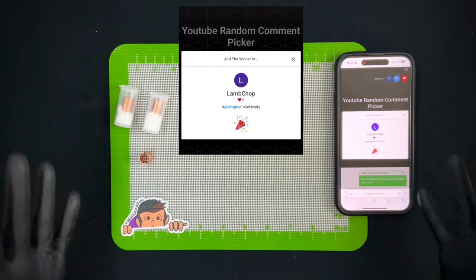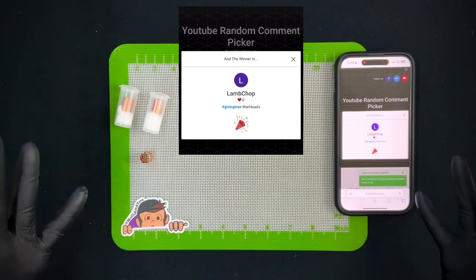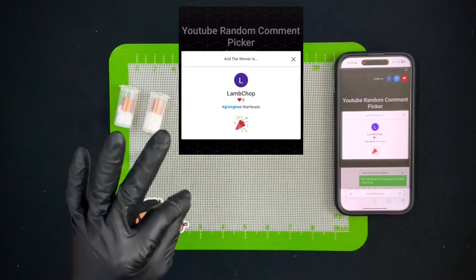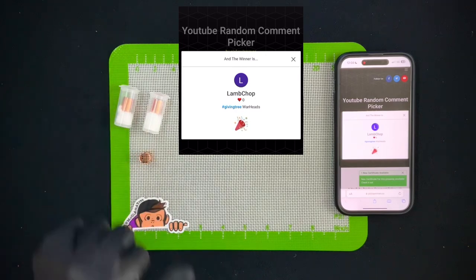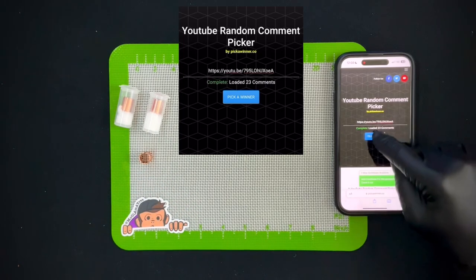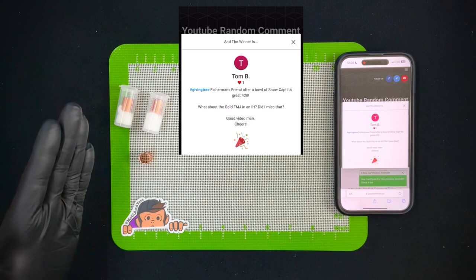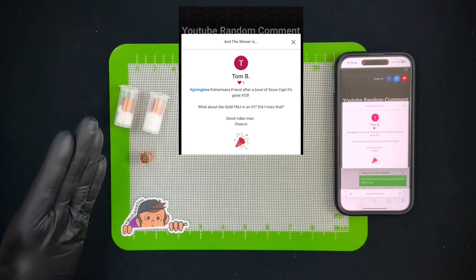It looks like Lamb Chop, you won and your favorite candy was Warheads, solid choice. Even though they're way too sour for me, I do agree that those are great candy. And our second winner is Tom B, Fisherman's Friend after a bowl of Snow Cap, it's great 420.